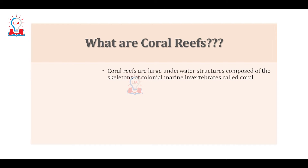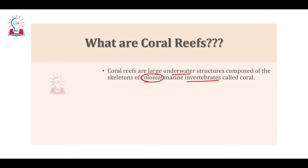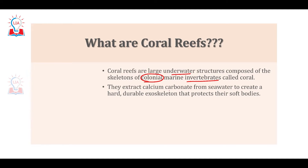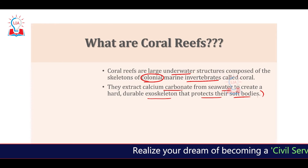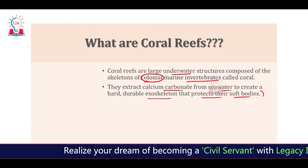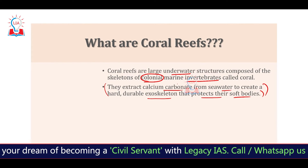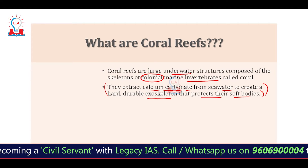Let's understand what corals are. Corals are underwater invertebrate structures — they are invertebrates, they live underwater, and they are colonial in nature. These are the three key terms you will use when defining a coral. The coral extracts calcium carbonate from seawater and creates a hard shell or exoskeleton in order to protect its soft body.